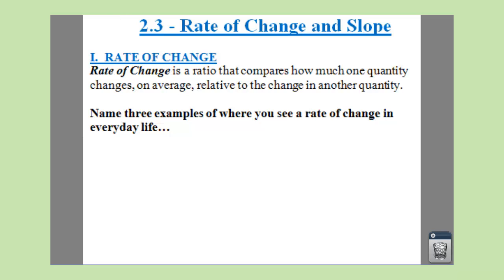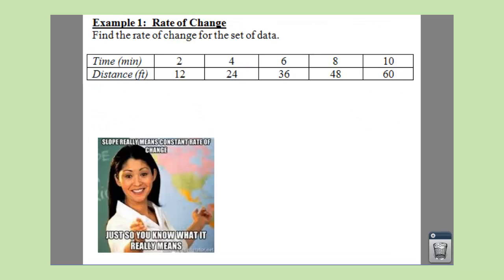So let's look at our first example here. Oh hey, Mom looks just like her, right? That's not my mom. All right, so what we want to do is find a rate of change for this set of data. We have our time in minutes, our distance in feet. When we look at a horizontal table like this, your top row is always your x's, your bottom row is always your y's.